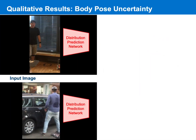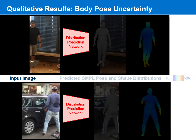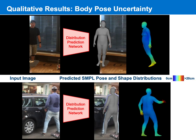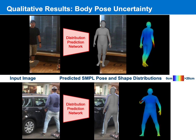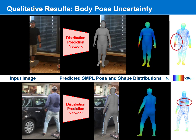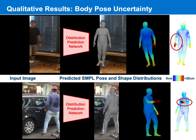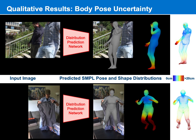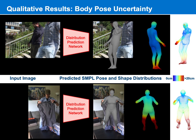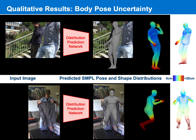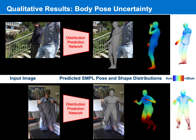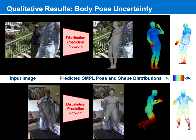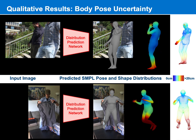Even beyond realistic shape combination, predicting distributions over SMPL parameters proves to be useful when dealing with occluded single image inputs, where the network predicts larger variances for SMPL parameters corresponding to occluded body parts. Hence, we obtain a plausible 3D body reconstruction given by the mean shape and pose, as well as a measure of aleatoric uncertainty over the 3D vertex locations, which is useful for downstream tasks.